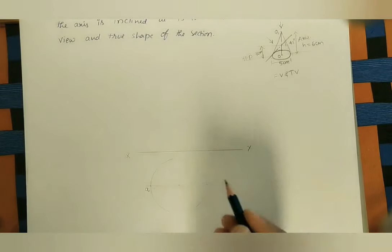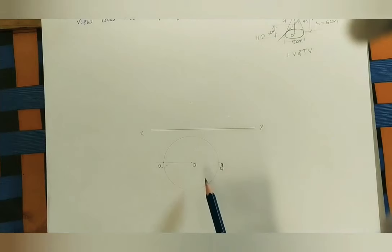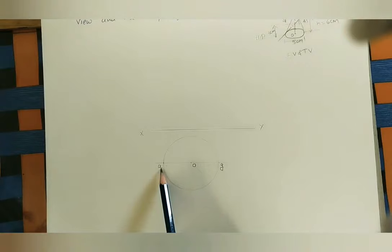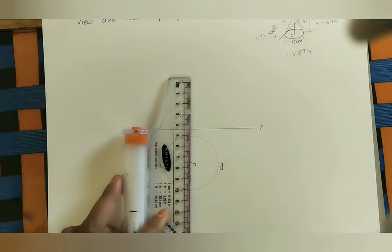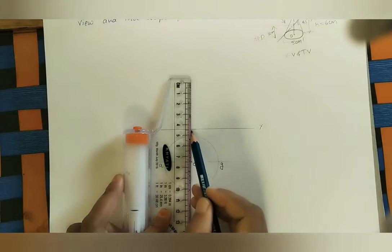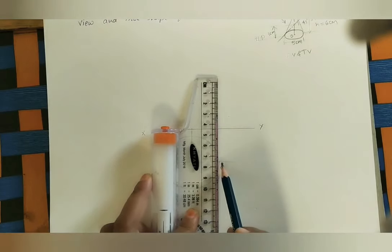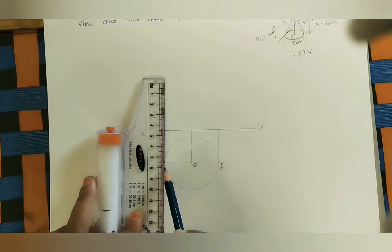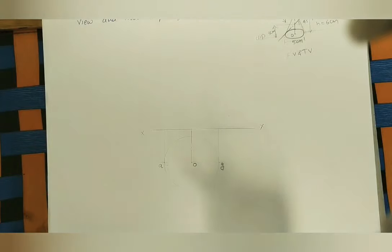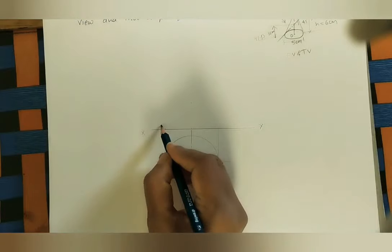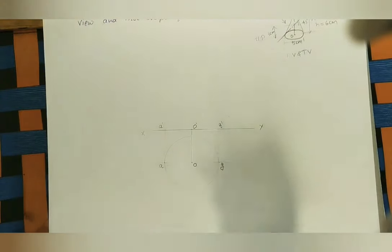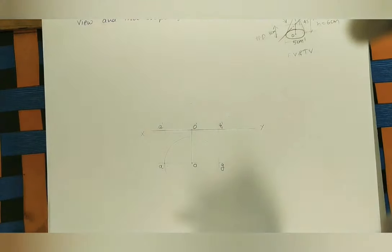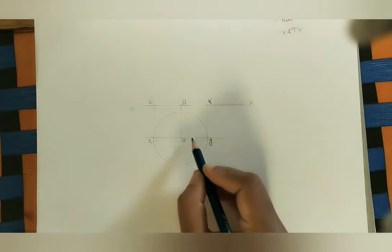Mark point A at one end, G at the other end, and O at the center. This is the top view of the cone. At all these points — A, G, and O — do the projector lines up to the XY line. Projector lines should be in thin lines. In the top view we use small letters; in the front view we use small letters with dash: A-dash, G-dash, O-dash. As we know, from the top view the apex and center coincide; we name the apex O1.